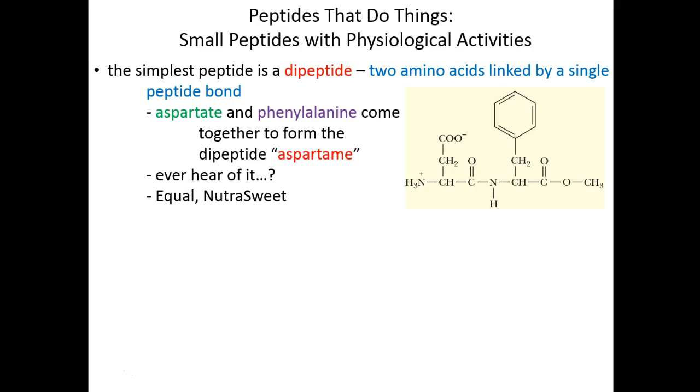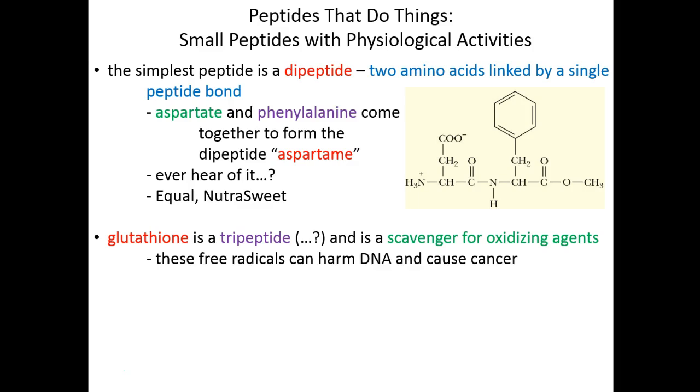Not good stuff—shown to have some detrimental effects on overall health and physiology. Glutathione is a tripeptide, made up of only three amino acids. It's critically important for our cells because it gobbles up oxidizing agents, things like free radicals that could break our DNA and induce mutations.